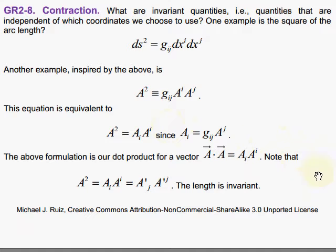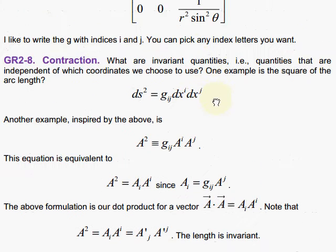We'll conclude Chapter 2 with the discussion of contraction. Here, we have the line element squared, the differential line element squared given by the g_ij's and the differentials. This is an invariant quantity, like the length of a distance between two points, and that's going to be invariant. It doesn't matter what coordinates you choose to do that.